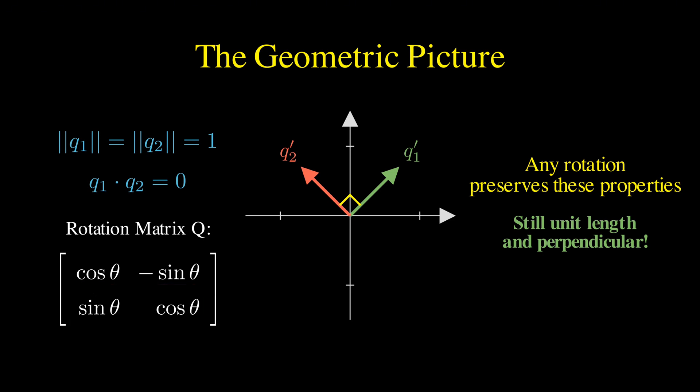And we can verify that Q transpose Q does indeed equal the identity. Thus, any rotation matrix is orthogonal, and in fact, rotations are the most intuitive examples of orthogonal transformations.